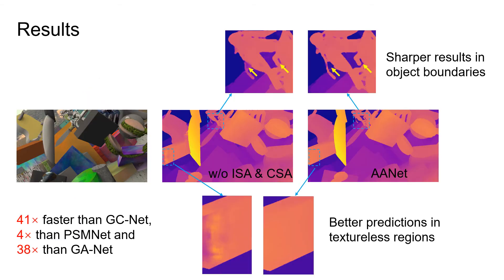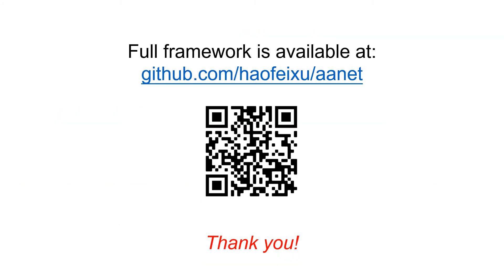Our method can produce better results in object boundaries and textureless regions while being an order of magnitude faster than popular stereo models. Our full framework is available at GitHub. Thanks for watching.